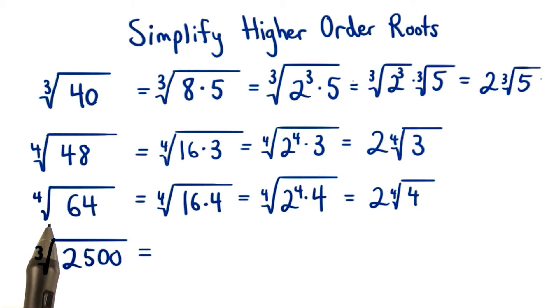We use a similar method for finding the fourth root of 64. We rewrite 64 as 16 times 4. Take the fourth root of 2 to the fourth, which leaves us with 2 times the fourth root of 4.